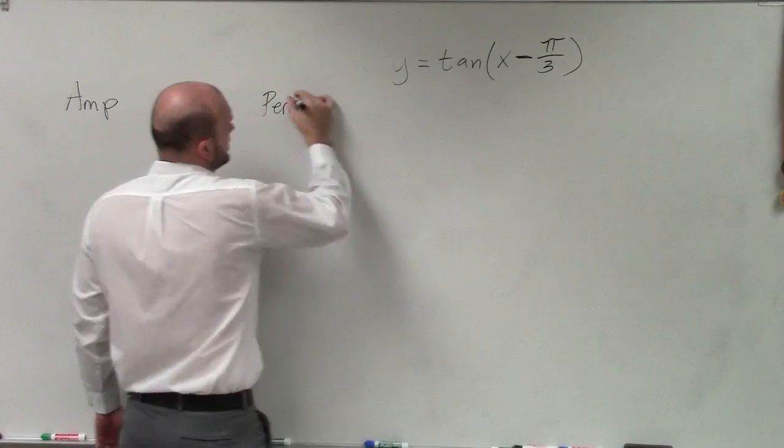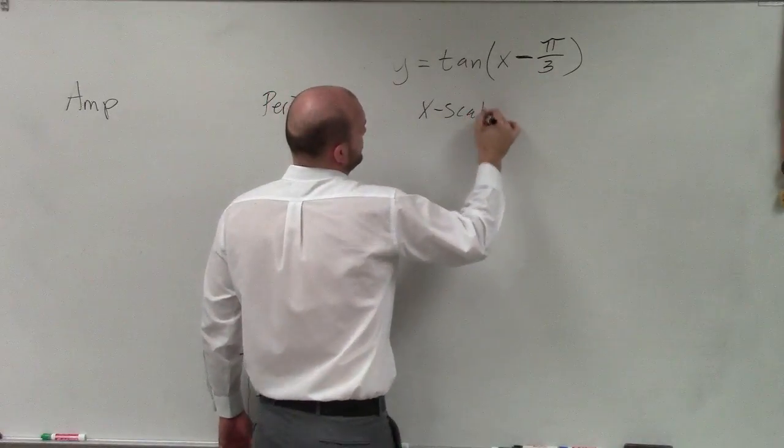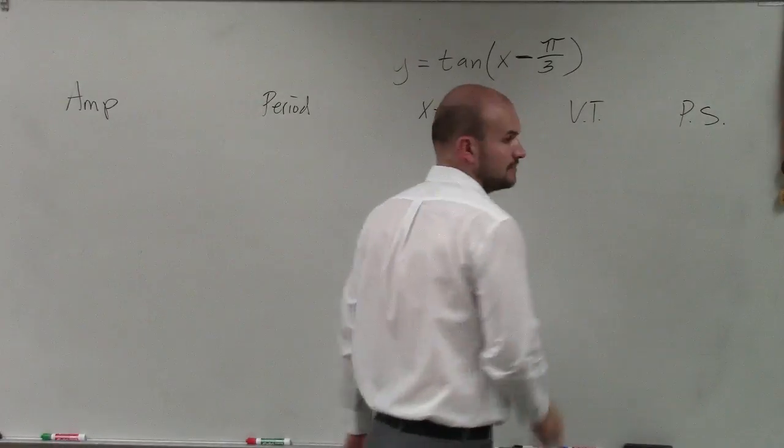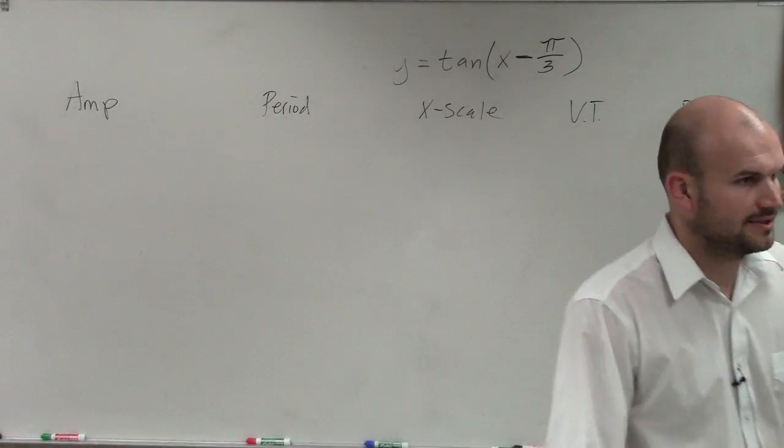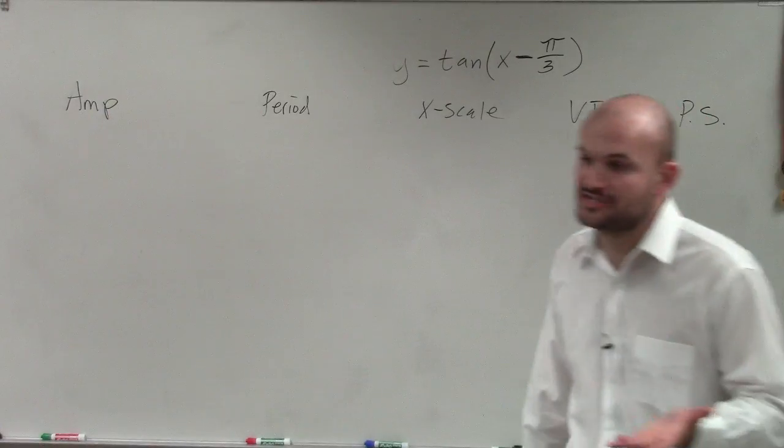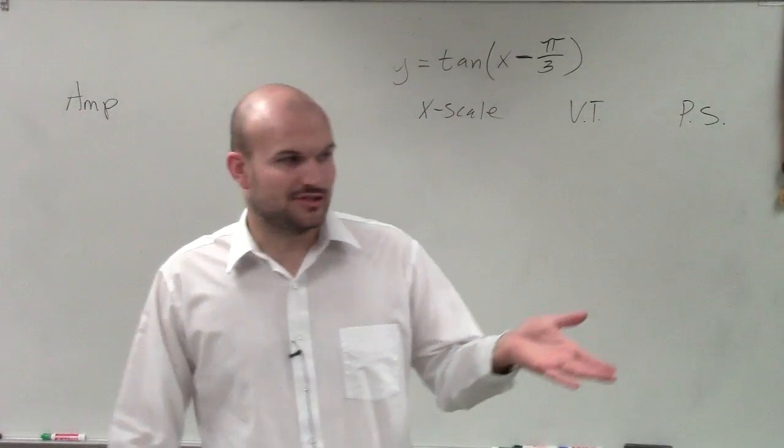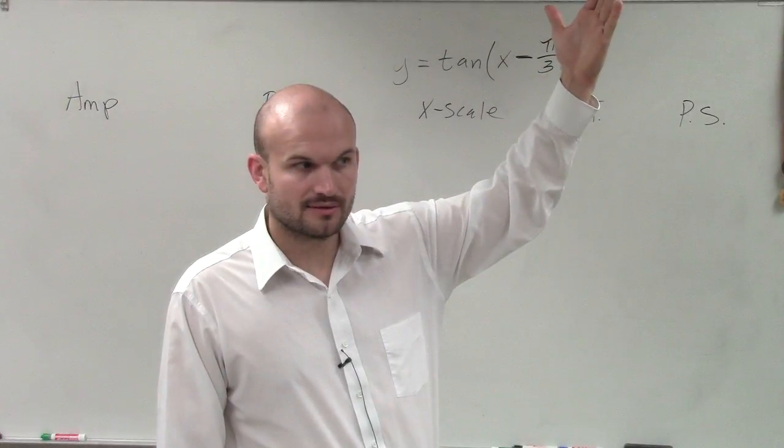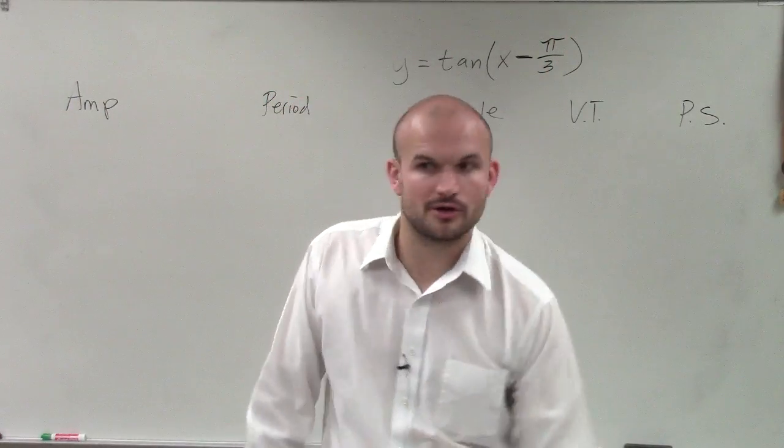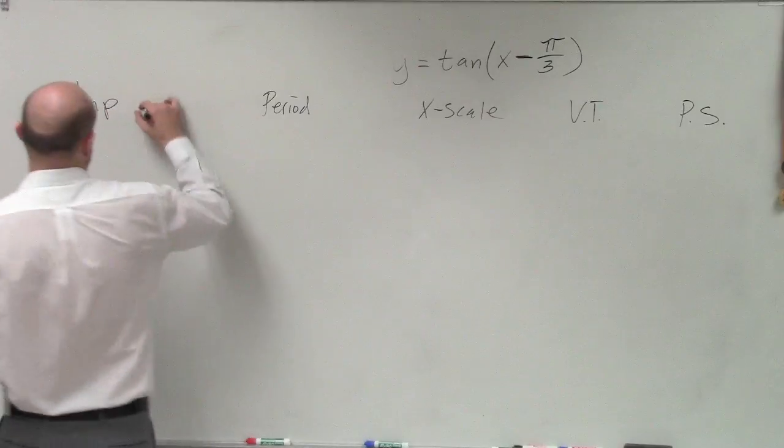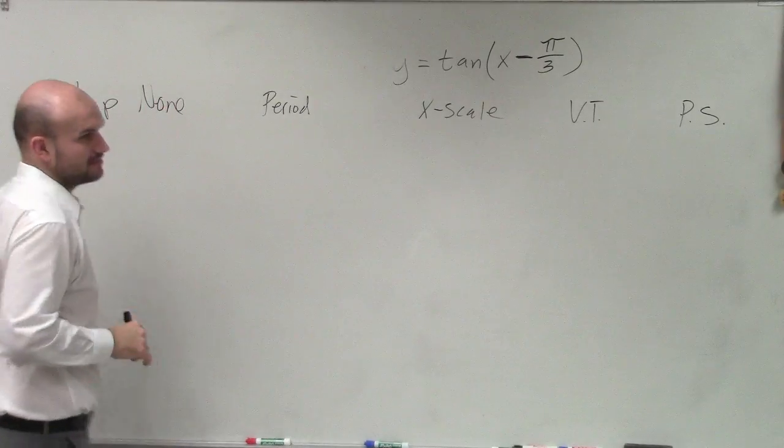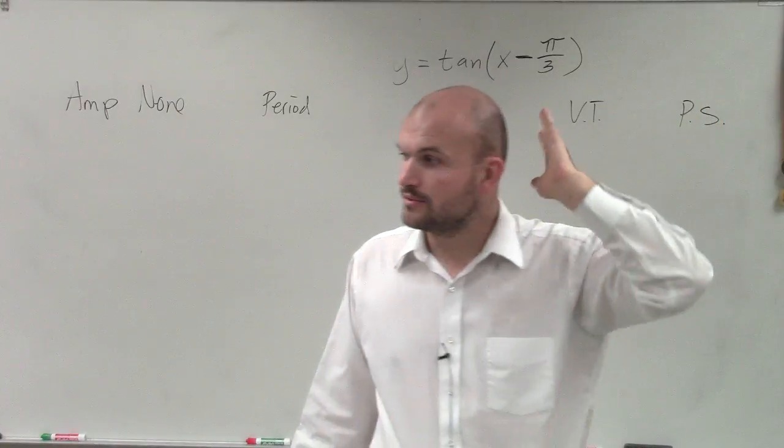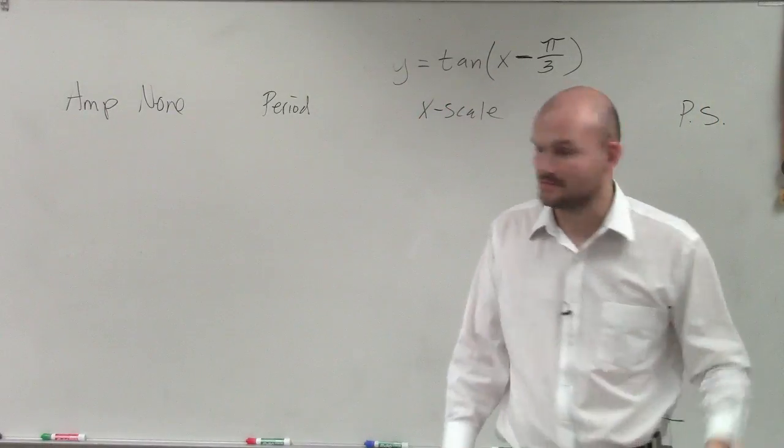Amplitude, period, x-scale, vertical transformation, and phase shift. Doing the exact same thing. Now the nice thing about tangent and cotangent, the amplitude - did you guys notice that the graph shot up approaching its asymptote? So there's no ceiling to it or no ground. So the amplitude, there is no amplitude. It's infinite in the positive and the negative direction. So it's none.